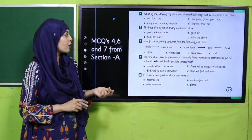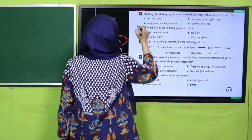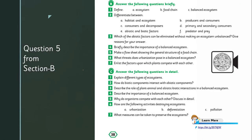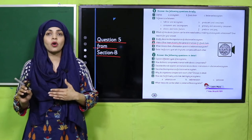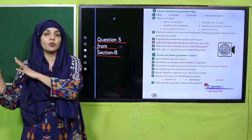Note down your homework: do MCQ numbers four, six, and seven from section A in your books. Next, for section B question number five, make a flow sheet showing the general structure of a food chain — first comes the sun, then the producer or autotrophs, then the consumers or heterotrophs, and then you list the primary, secondary, tertiary, and quaternary consumers. Complete this in your notebooks.